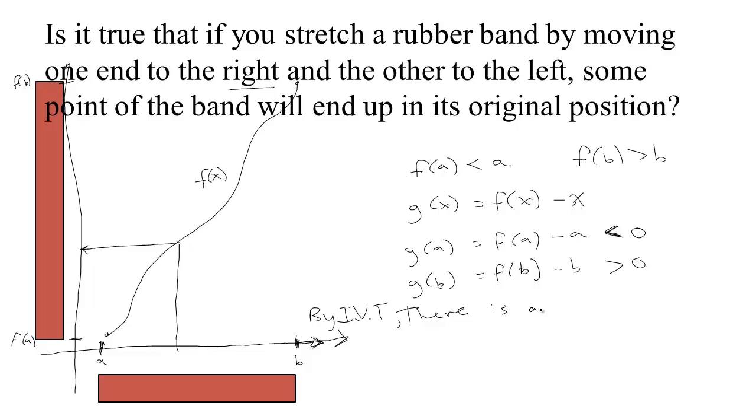there is a C between A and B such that since this function G, at one point it's below the x-axis and another point it's above the x-axis, there's got to be some point where it's on the x-axis. So, there's a point C such that G of C equals 0.